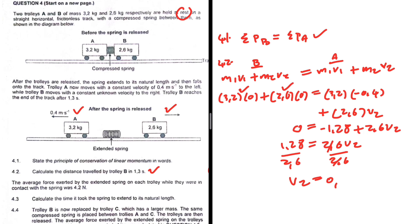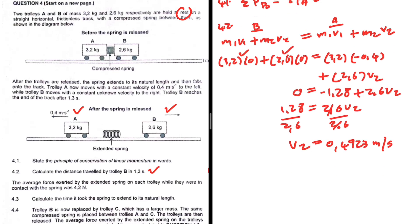That is zero point—is it the final answer? No, it's not the final answer, so I cannot round off to two decimal places. I have to round off to four, so this is 0.4923 meters per second.